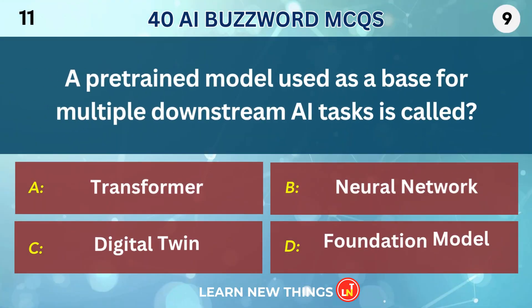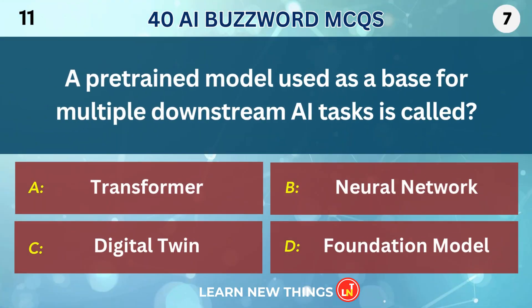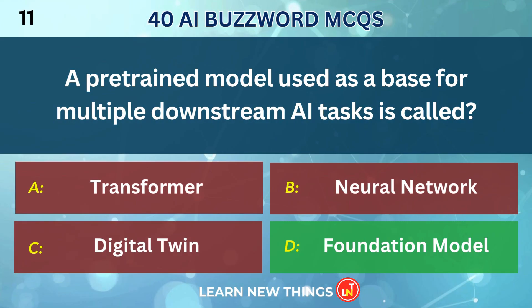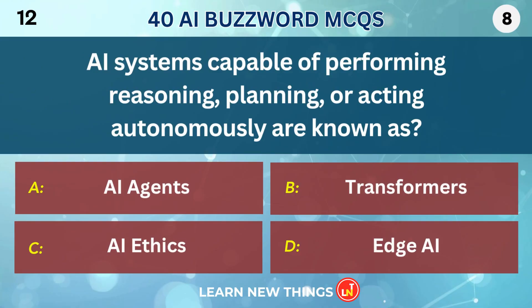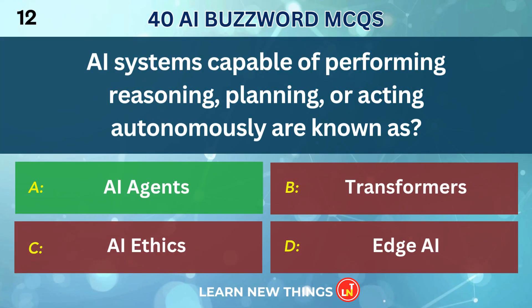A pre-trained model used as a base for multiple downstream AI tasks is called a Foundation Model. AI systems capable of performing reasoning, planning, or acting autonomously are known as AI Agents.